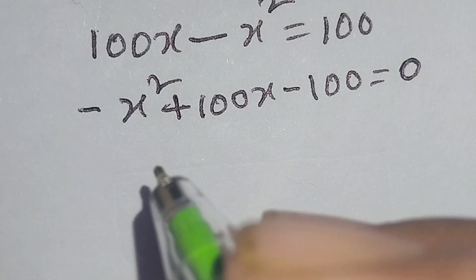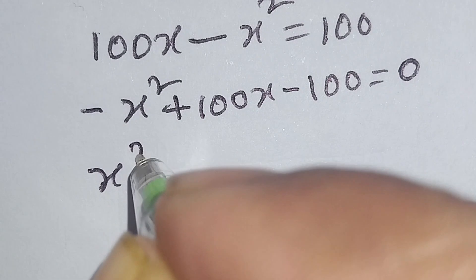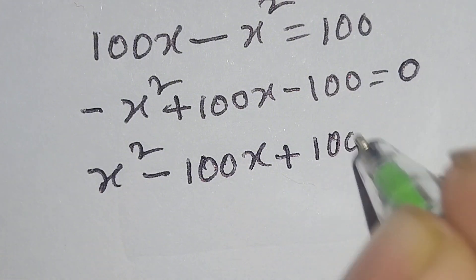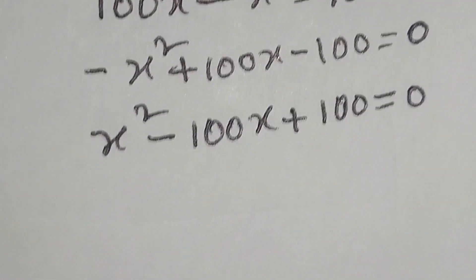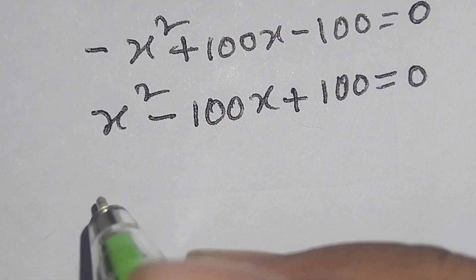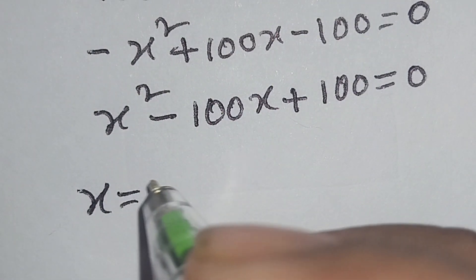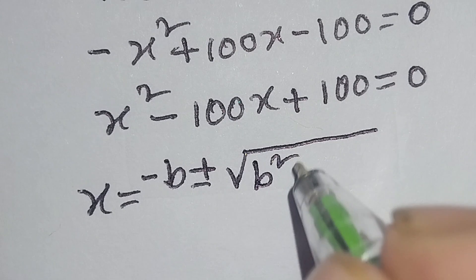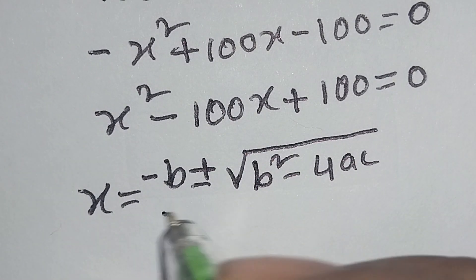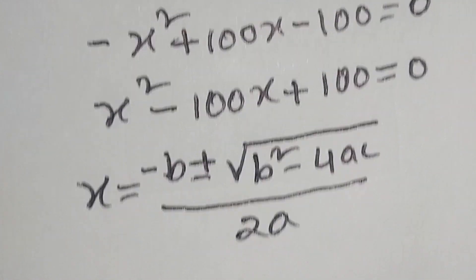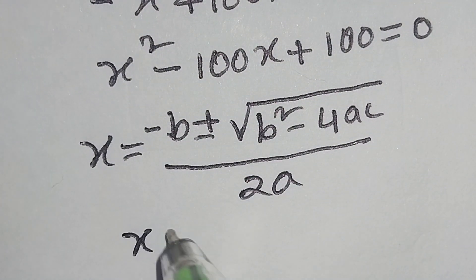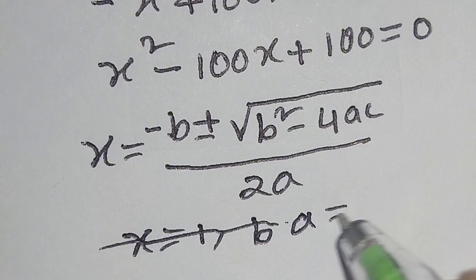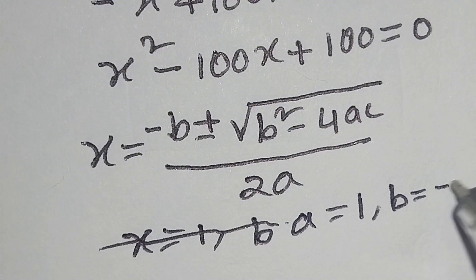Multiply both sides by minus 1, we get x squared minus 100x plus 100 is equal to 0. This is a quadratic equation, so we can write x is equal to minus b plus or minus square root of b squared minus 4ac, over 2a. Here a is equal to 1, b is equal to minus 100.